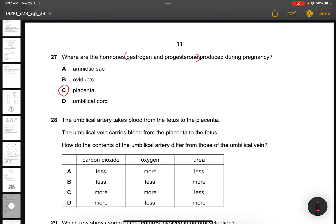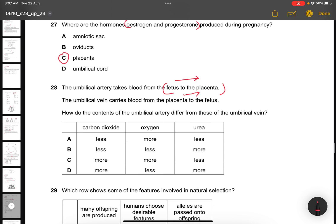Question 28. The umbilical artery takes blood from the fetus to the placenta. The umbilical vein carries blood from the placenta to the fetus. How do the contents of the umbilical artery differ from those of the umbilical vein? You can see that they want the umbilical artery. So it's from fetus to placenta. Meaning the baby is returning the stuff back to the mother. So this of course will be more carbon dioxide, less oxygen, and more urea. They want fetus to placenta.